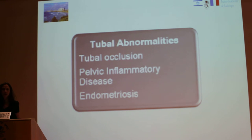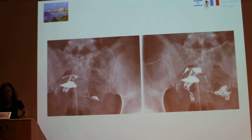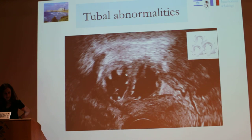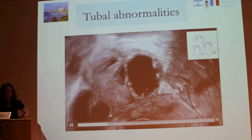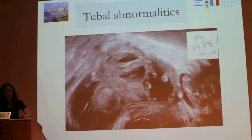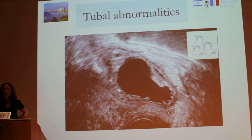For tubal abnormalities and tubal occlusion, hysterosalpingography is the appropriate exam because it is currently the only study that can determine whether or not there is tubal obstruction. Here you have an example on ultrasound of a hydrosalpinx — a dilated fallopian tube. You can see free fluid and the irregular wall of the fallopian tube. It is very important, when you identify this structure, to twist the probe to make a precise diagnosis of hydrosalpinx and not confuse it with an ovarian cyst.